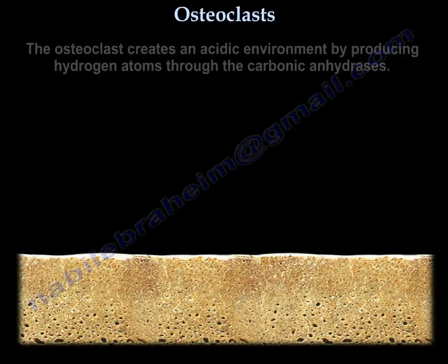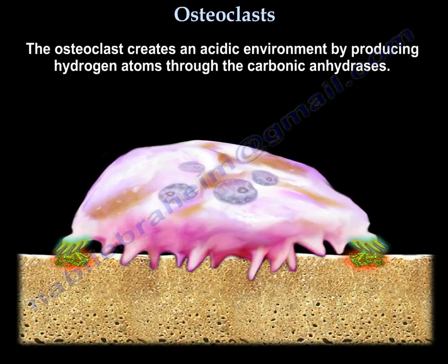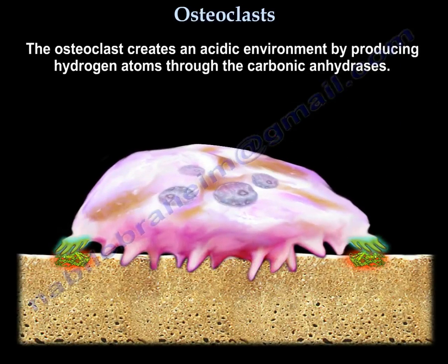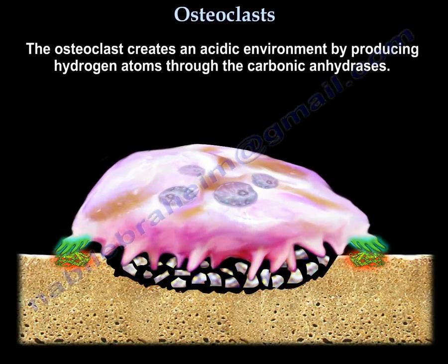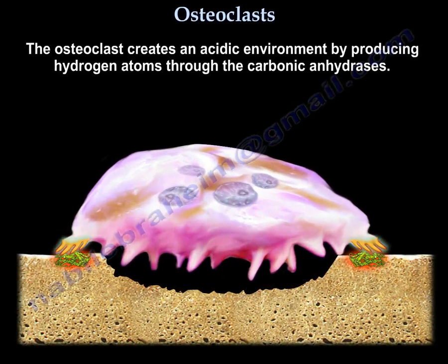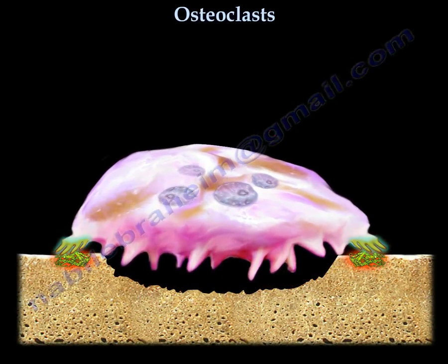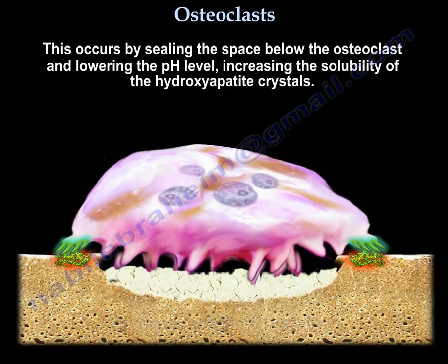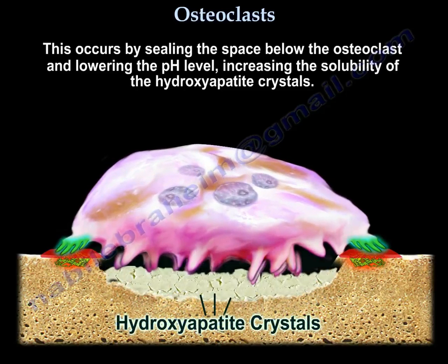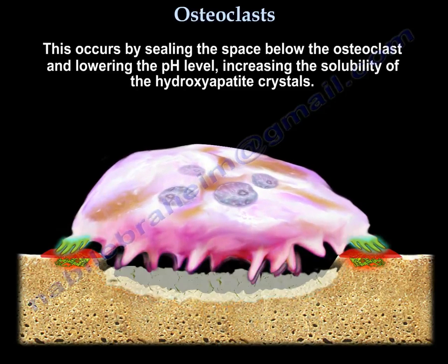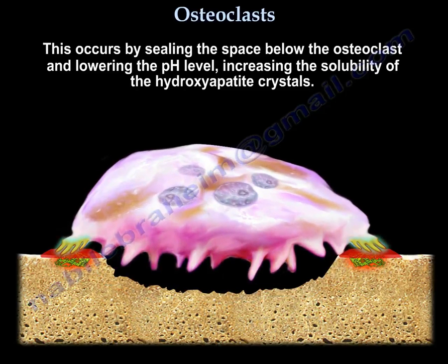The osteoclast then creates an acidic environment by producing hydrogen ions through carbonic anhydrase, which demineralizes the bone and exposes the organic matrix. This occurs by sealing the space below the osteoclast, lowering the pH, and increasing the solubility of the hydroxyapatite crystals.